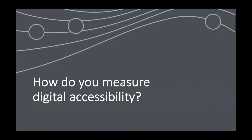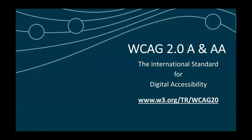For years, the answer to measuring digital accessibility has been WCAG 2.0 AA — it is the international standard for digital accessibility. There's a new wrinkle: we'll cover WCAG 2.1 as well and I'll give you a taste of where that's already in place. But for years the international standard for measuring digital accessibility for compliance has been WCAG 2.0 AA.